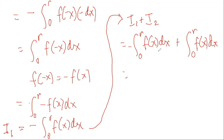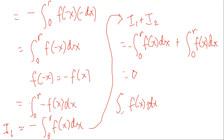Since the functions are the same and the limits are also the same, we can add them up and this becomes 0. So we have proven that the integral of f(x) dx from negative r to r is equal to 0. That's it. Thank you.